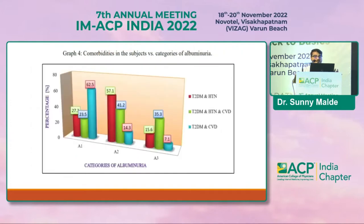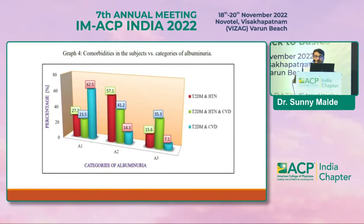This graph shows comorbidities correlated with categories of albuminuria. In A1 (normal albuminuria), type 2 diabetes mellitus with cardiovascular disease was most common at around 62.5%. In the microalbuminuria group, type 2 DM with hypertension was most common. In A3 (macroalbuminuria), type 2 DM, hypertension, and CVD together accounted for around 35.3%.